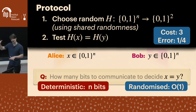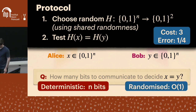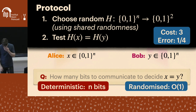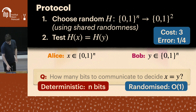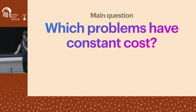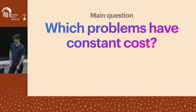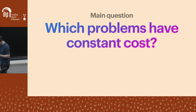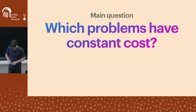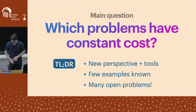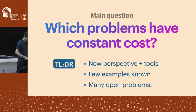This is an example that maximally separates deterministic and randomized communication in this model. I want to ask: which two-party communication problems admit these hyper-efficient protocols that have constant cost — cost that does not depend at all on the length of the input?